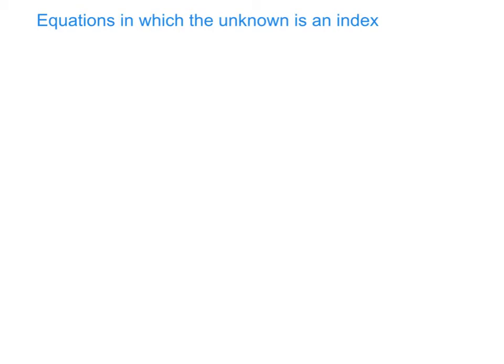So for example, if we have something like this: 4 to the power of x is equal to 16. So what we're trying to work out is what's the value of x, the index on the 4's shoulder. And our method for solving these questions is always try and have the base numbers the same on the left and the right hand side of the equation.